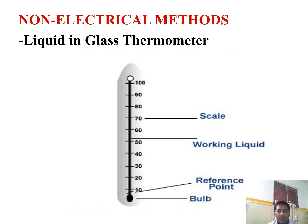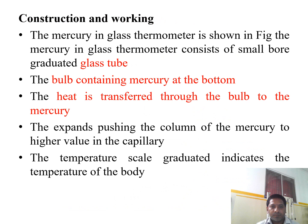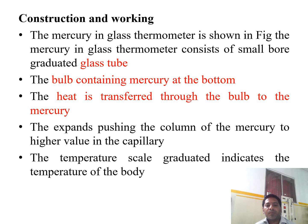The first is the non-electrical method. In this category, we have the liquid-in-glass thermometer, where the liquid used is mercury. The scale range is 10 to 100. The mercury-in-glass thermometer consists of a small bore graduated glass tube with a bulb containing mercury at the bottom. Heat is transferred to the bulb and to the mercury — this is the sensing part. The mercury expands, pushing the column to a higher value in the capillary. The temperature scale gradually indicates the temperature of the body.